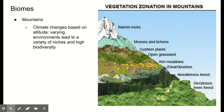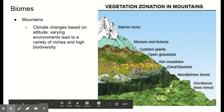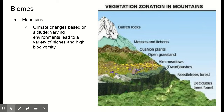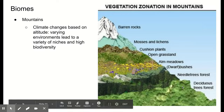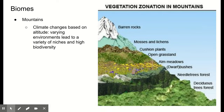The mountain biome is very variable because climate changes with altitude. Going further up the mountain, it gets colder and a little drier. So we have a variety of environments: deciduous forest at the base, coniferous forest higher up where it's colder, then shrubland and grassland where it gets too dry for trees, then just mosses and lichens, and finally barren rocks at the very top. This variety of environments creates a variety of niches and high biodiversity, similar to forests.